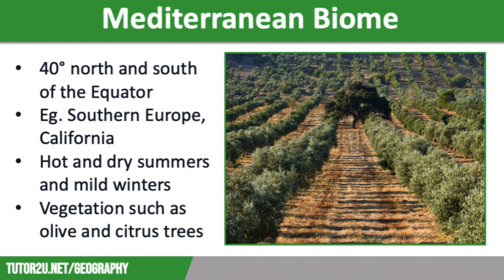Let's move on to the Mediterranean biome. It lies around 40 degrees north and south of the equator in Southern Europe, California in the USA, South Africa and Western Australia, and it is characterized by hot and dry summers and mild winters. Vegetation includes small drought-resistant trees and evergreen shrubs, as well as olive trees and citrus trees such as oranges and lemons.